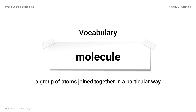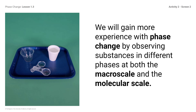Considering both the macroscale and molecular scale will help us explain what happened to the lake on Titan. Considering the scale of an object, process, or event is useful in many areas of science. For example, if a scientist is studying a galaxy in space, she must consider how large the objects in the galaxy are. If a scientist is studying how a landform has changed over time, he must consider the scale of changes within a day and those that occur over long periods of time. The word molecular is used to refer to molecules. We will gain more experience with phase change by observing substances in different phases at both scales. Since we cannot directly observe phase change in the methane lake on Titan, we will learn about phase change by observing the most common liquid on Earth — water.